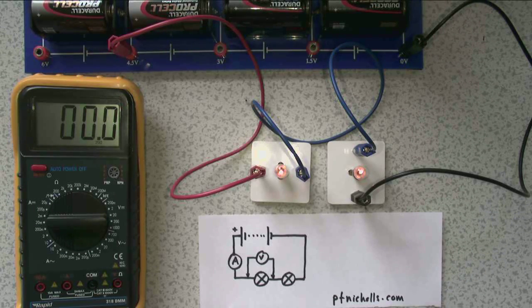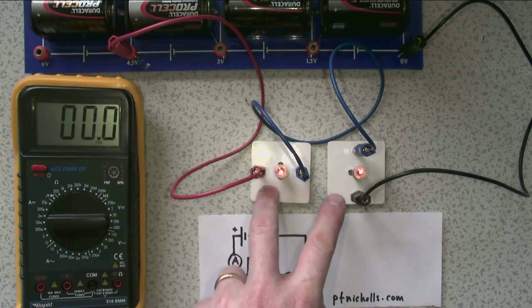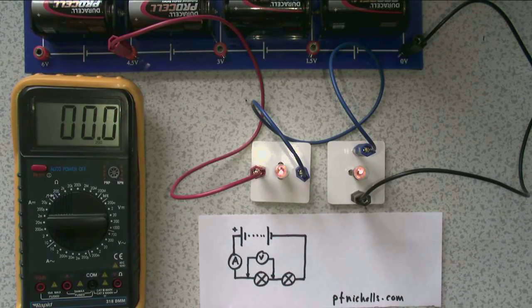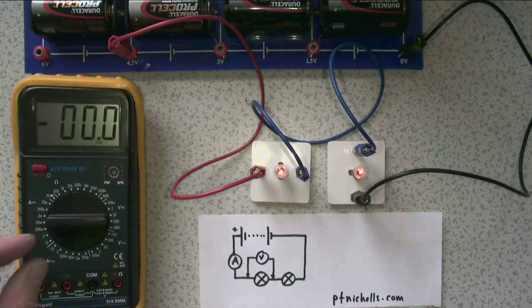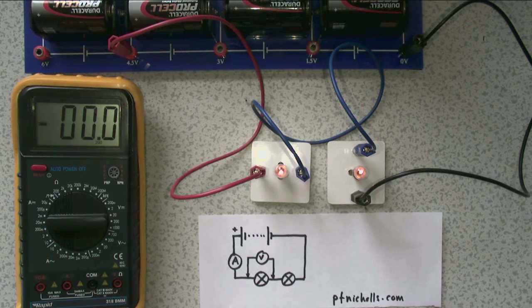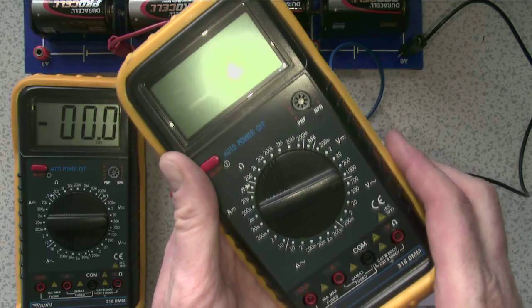Now I'm going to start off by measuring voltage, and I've constructed a very simple little battery and bulb circuit, which I've drawn out here, and I'm going to measure the voltage, which I've indicated with this voltmeter across this bulb here.